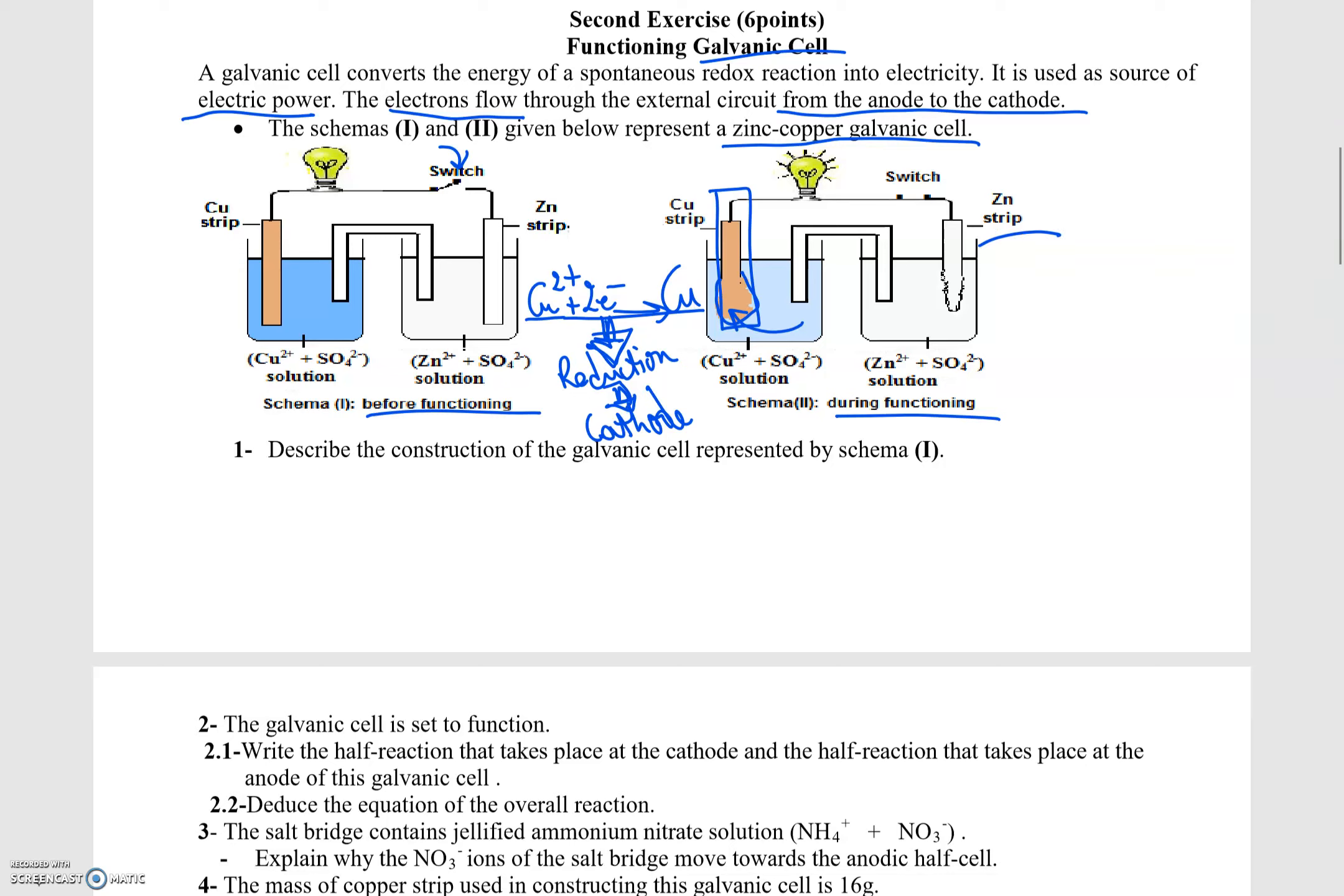The opposite is true here. Even before reading the questions, I can do this on scratch. Zn is becoming Zn²⁺ by losing two electrons. This is oxidation, and Zn is the anode.